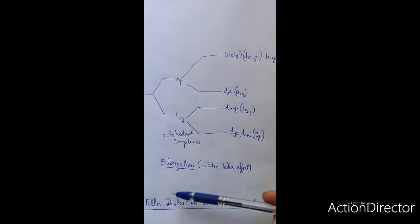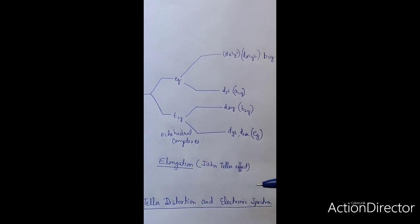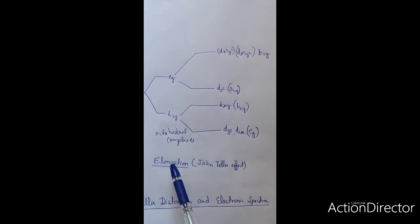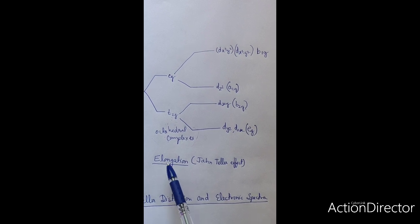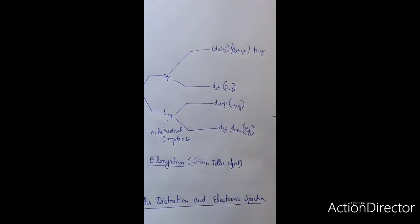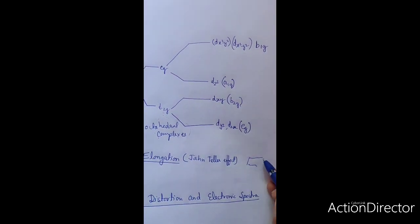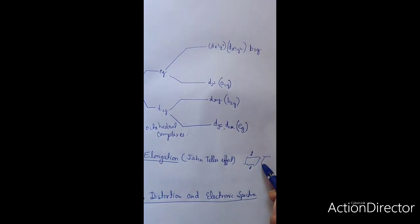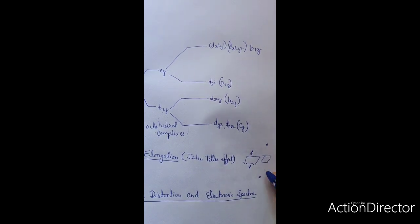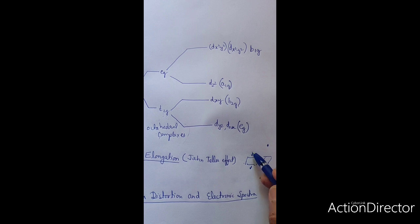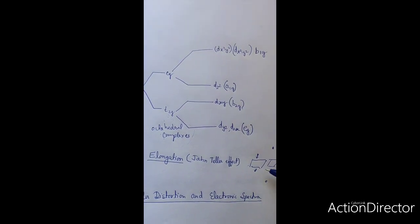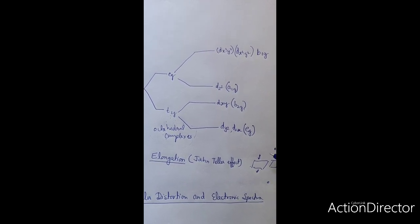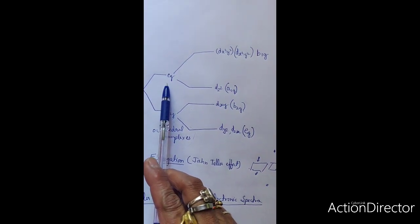This is a kind of elongation in an octahedral complex where the axial ligands are far away from the central metal atom. Another type of distortion is compression, where those two axial ligands come closer. Elongation means bond elongation in the z-direction; compression means compression of the bond in the z-direction. This lowering of symmetry occurs when the eg set is asymmetrically filled.